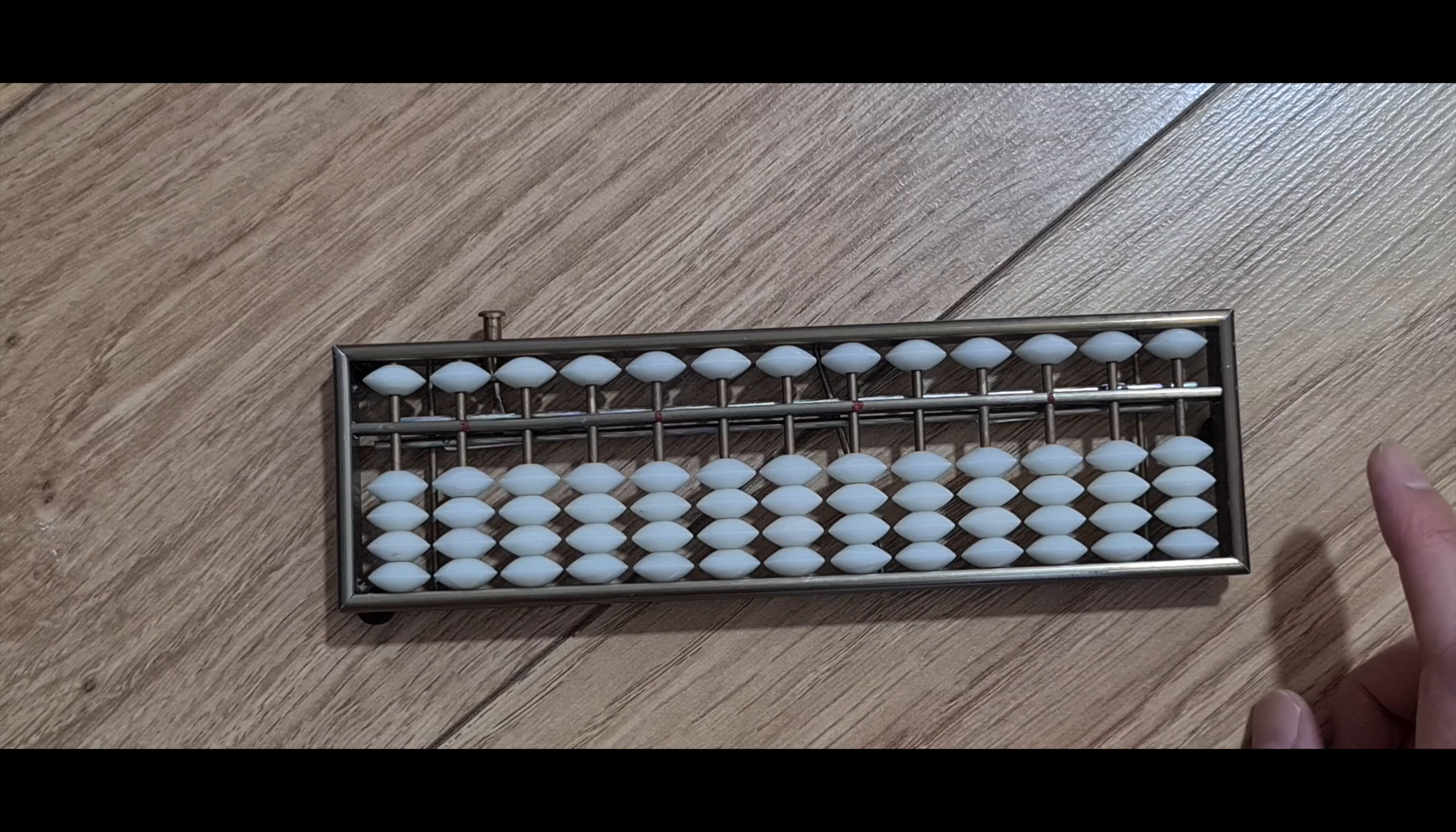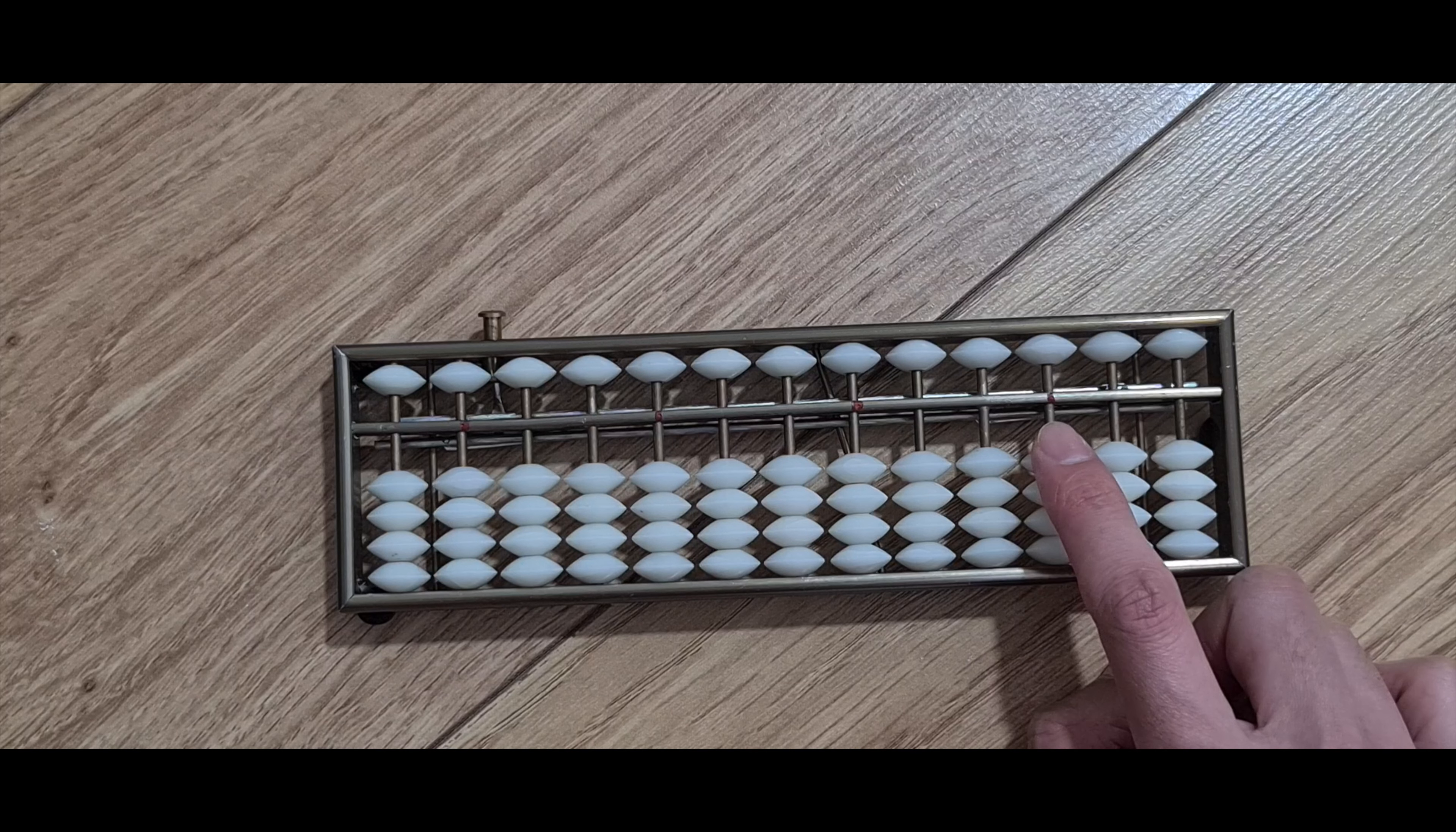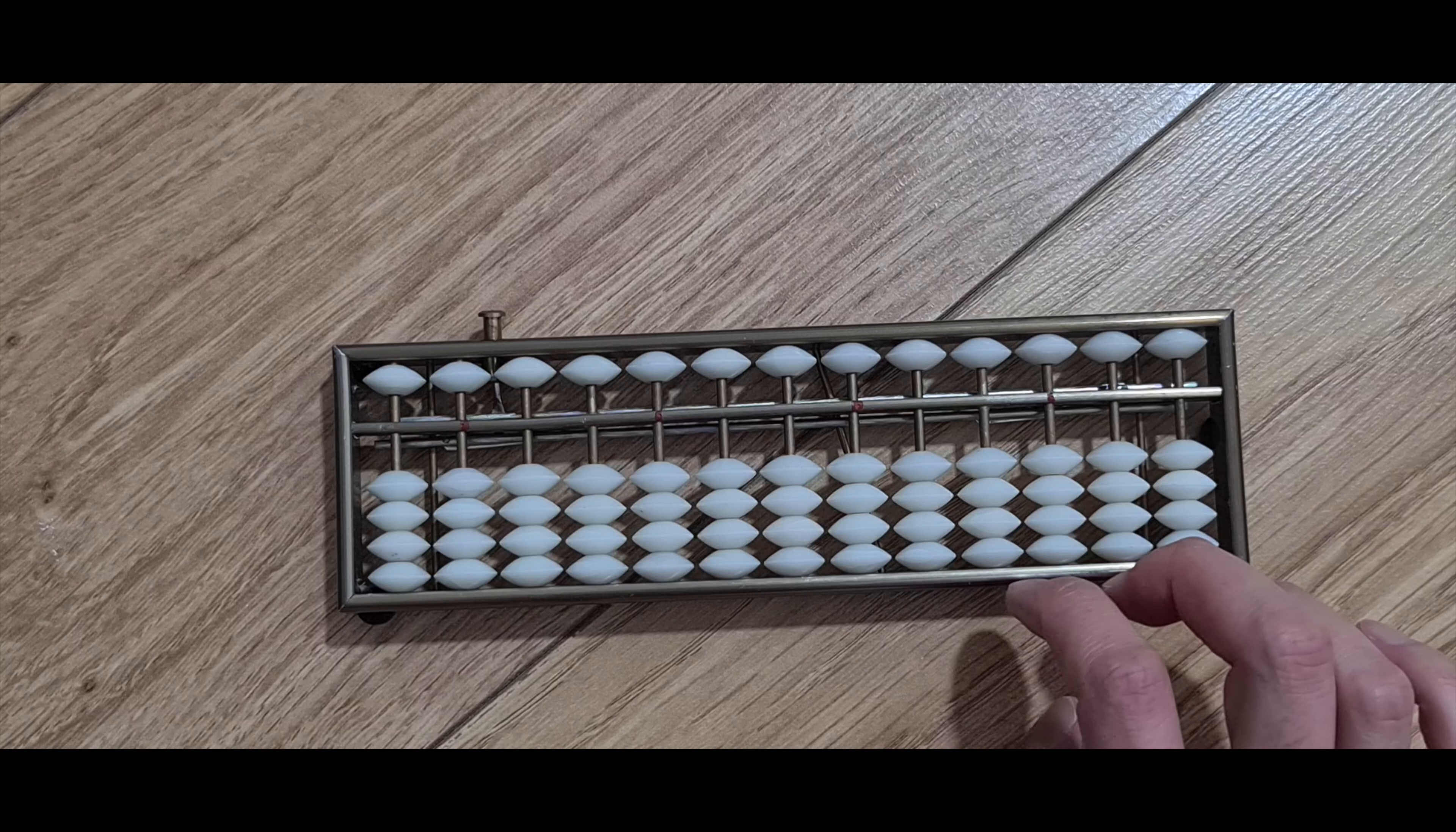So this abacus is based on the Chinese numbering system. You know, you have your single unit, decimal, hundreds, thousands. But yeah, they have it marked here. So one, two, three, one, two, three, every third one.